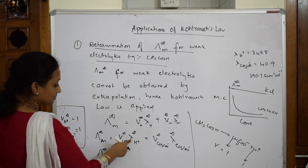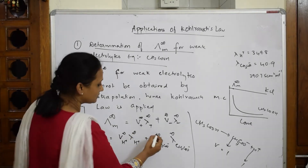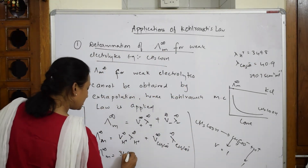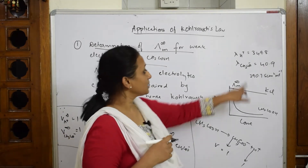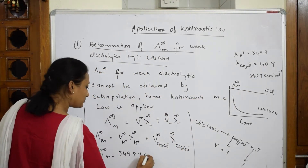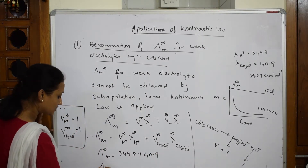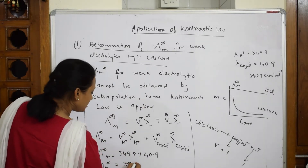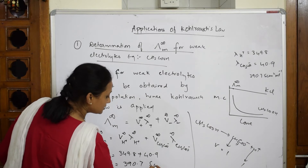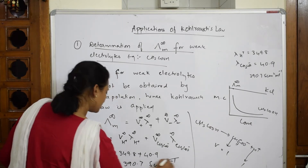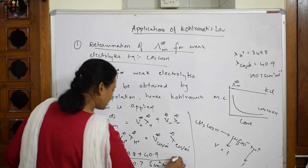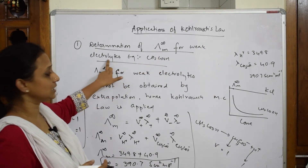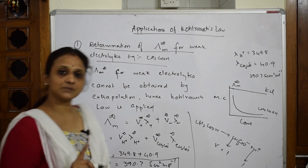The molar conductivity of H⁺ at infinite dilution is 349.8 S·cm²·mol⁻¹, and for CH₃COO⁻ it is 40.9 S·cm²·mol⁻¹. Adding these gives the molar conductivity at infinite dilution for acetic acid as 390.7 S·cm²·mol⁻¹. This is how we determine molar conductivity at infinite dilution for weak electrolytes using Kohlrausch law — the first application.